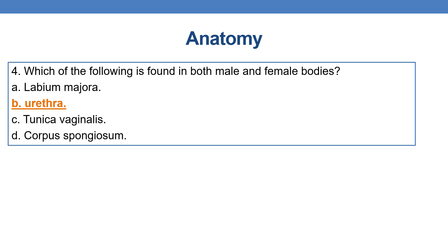Which of the following is found in both male and female bodies? Option B — urethra — is the correct answer. Urethra can be found in both male and female bodies. Labium majora is present in females, whereas tunica vaginalis and corpus spongiosum are present in males.